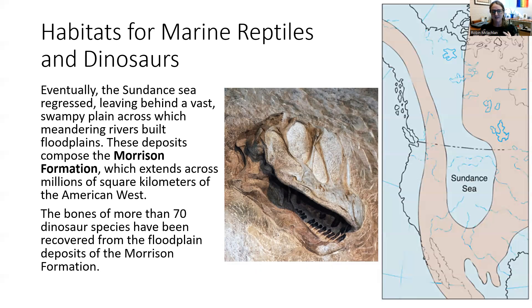Because of that swampiness, a lot of terrestrial fossils were preserved, including more than 70 dinosaur species that were recovered from the floodplain deposits of the Morrison Formation. This is one of the reasons why the Midwest is a huge place for fossil hunters, specifically dinosaur fossil hunters, to go explore.